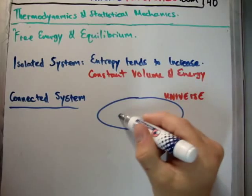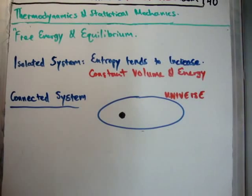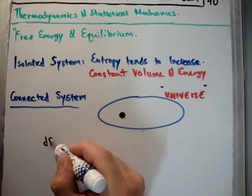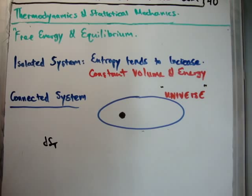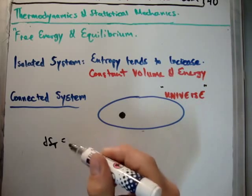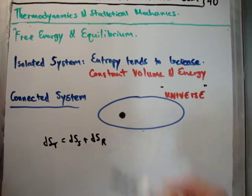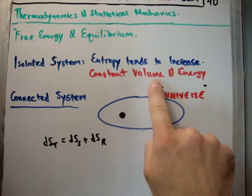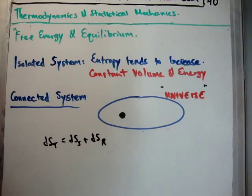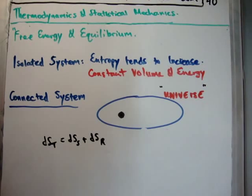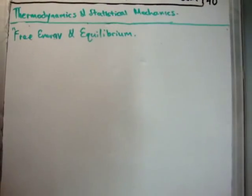What I'm going to do is put a smaller system which doesn't satisfy those conditions inside a reservoir, and we call that together a connected system, or the universe. In a connected system, the total entropy ds_total is going to be equal to the change in the entropy of our system plus the change in the entropy of our reservoir. And for constant volume and energy, this connected system is going to want to increase its entropy. Next, let's look at the thermodynamic identity inclusive of the chemical potential.